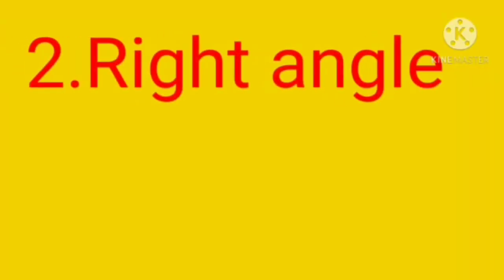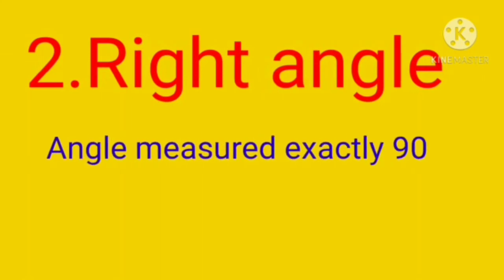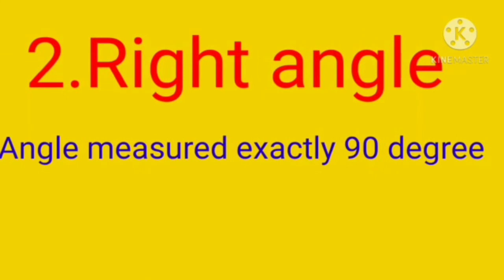And the second type is right angle. What is right angle? The angle measured exactly 90 degree is called a right angle. So exact aghi 90 degree iddre anthaha angles na na wo right angle antha karitthi vi. It looks like a L shape. So samani wagi right angle L shape ali irithi.